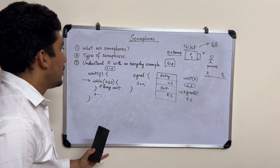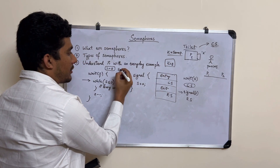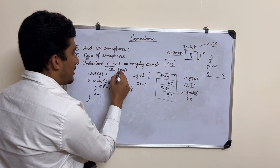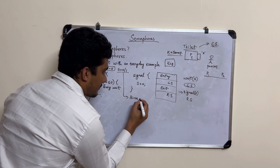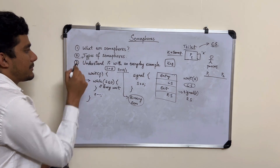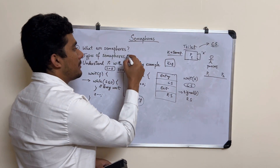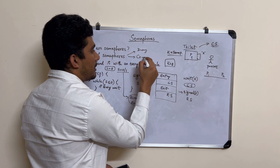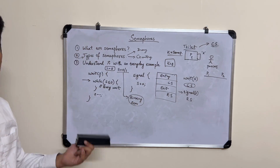In the example we just saw, the semaphore value S could only be zero or one. Such a semaphore is called a binary semaphore. Apart from binary semaphores, we also have something called counting semaphores. Let's try to understand counting semaphores with another example.